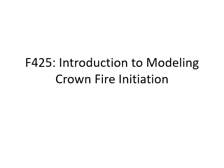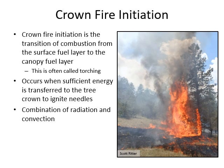We're going to talk about modeling crown fire initiation, often called tree torching when thinking about individual or groups of trees. Crown fire initiation is when a surface fire is able to ignite the crowns and spread into the crown of the tree. For this to occur, we need enough energy from the surface fire to heat our crown fuels and ignite them, coming in the form of both radiation and convection.